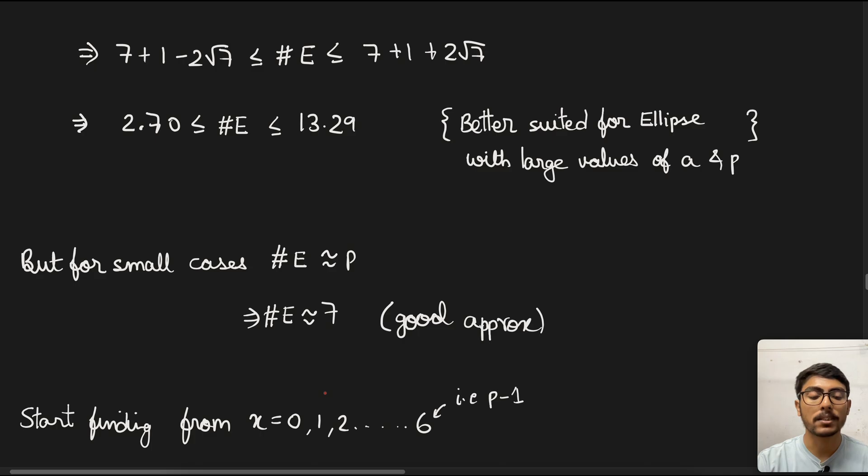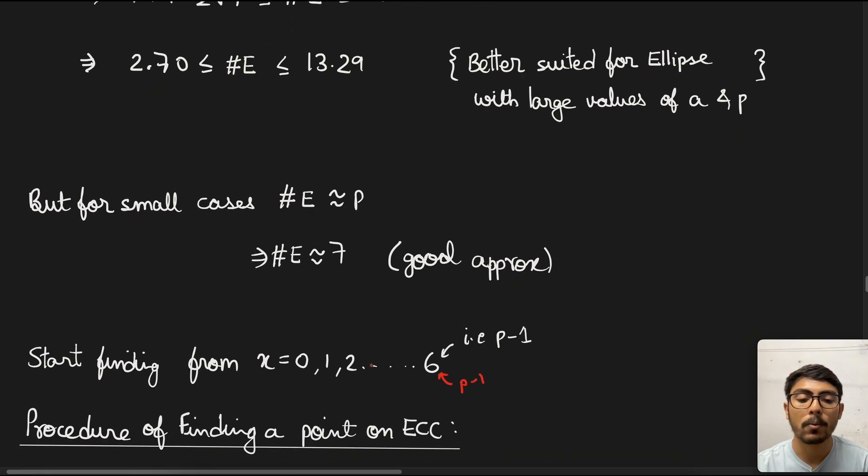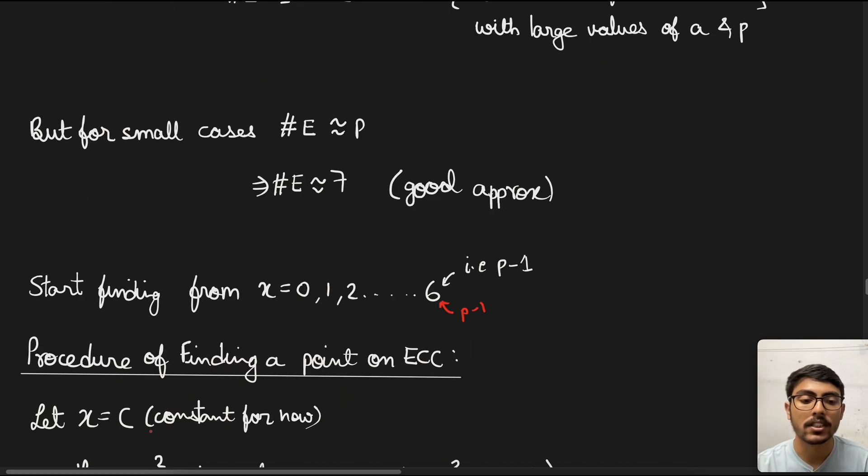Now, we move to the next point. How do we find the points in the elliptic curve? We need to go from 0 up till p - 1. So, 0, 1, 2, and up till p - 1. In our case, it will be 6. The procedure for finding a point on ECC: first, I will explain the concept, then we will go through the numbers one by one.